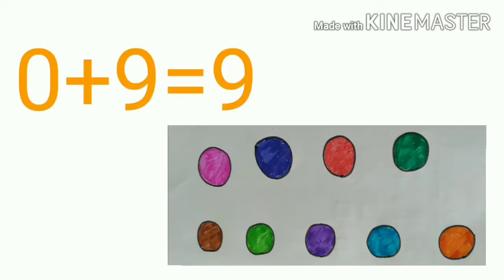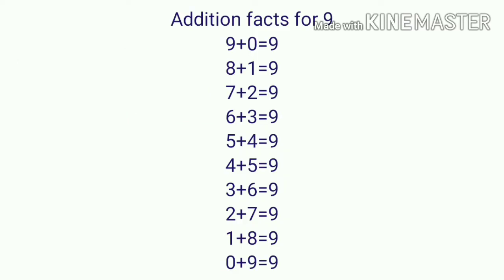Here, all the circles are shaded. Can you see any unshaded circles? No. So we can add 0 plus 9 is equal to 9. So children, here we get the addition facts for 9.